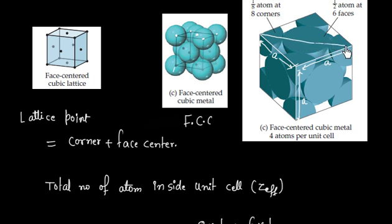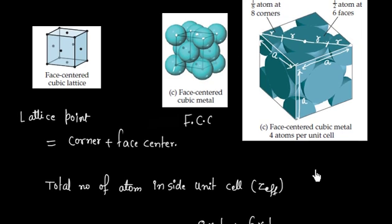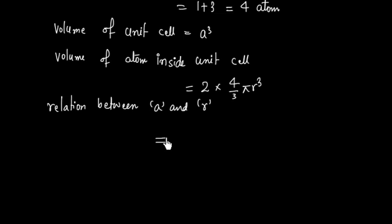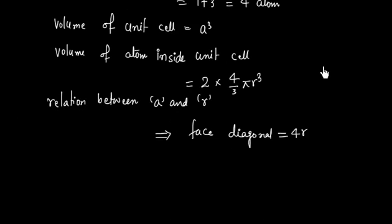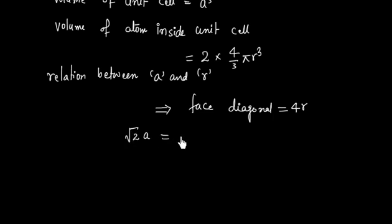We can see that atoms touch along the face. The center of the face atom, the center of corner atom 1, and the center of corner atom 2 are aligned along the face diagonal. Each distance is r, so the face diagonal equals 4r. The face diagonal in terms of A is √(A² + A²) = √2·A. So √2·A = 4r, giving us A = 2√2·r.